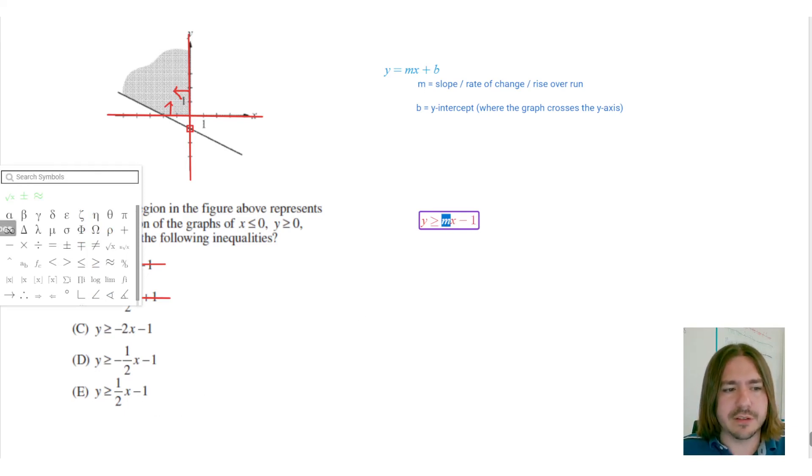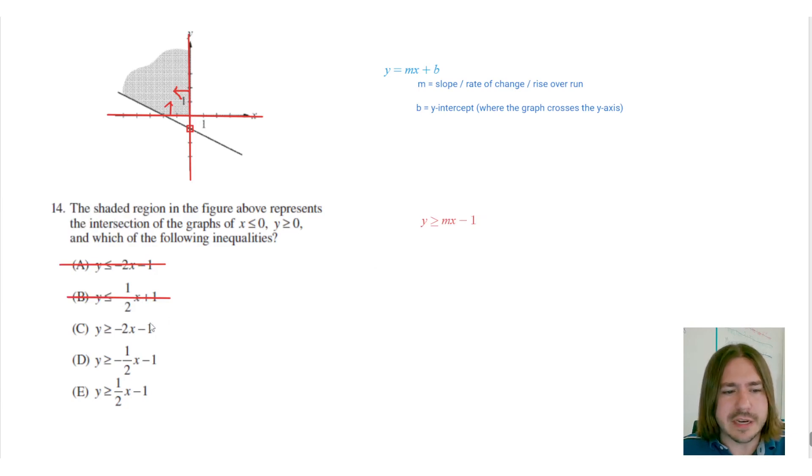So it's going to be something mx minus one. So the last thing to do is figure out what this m is, because the y-intercept didn't really narrow anything down - all of these have minus ones. That's not particularly helpful.